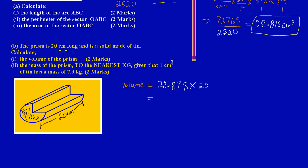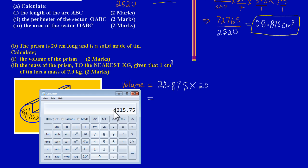I'm working with volume and my units are in centimeters, so let's pull up the calculator to see what that gives us. We have 28.875 multiplied by 20, and that equals 577.5.